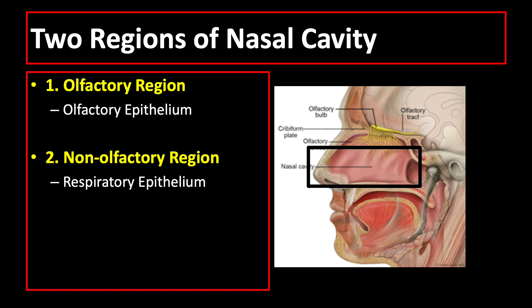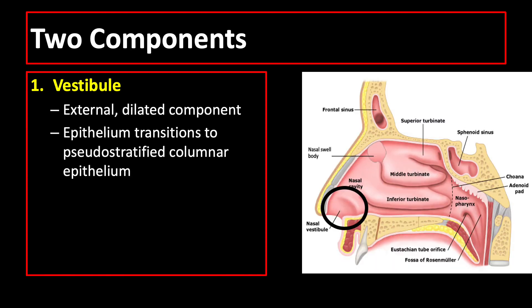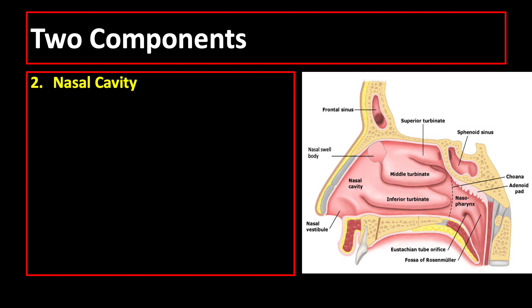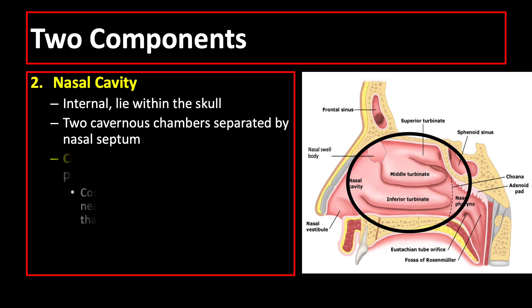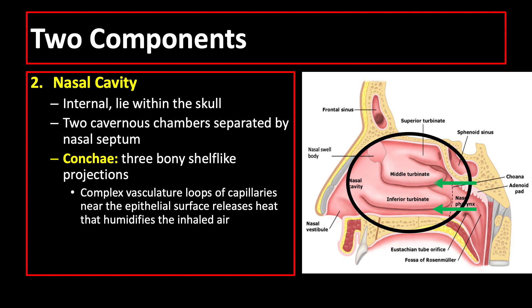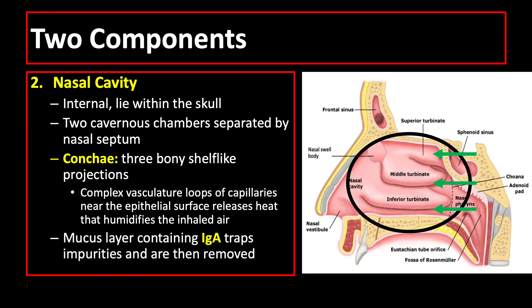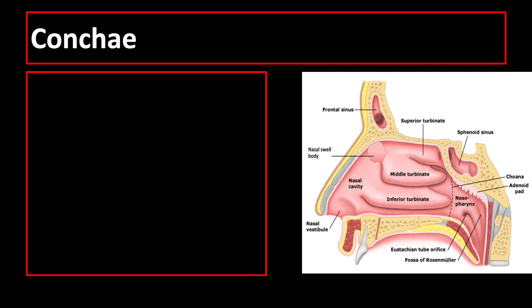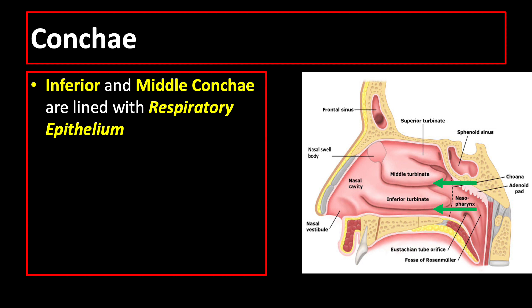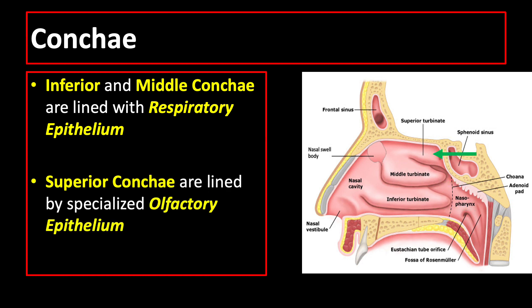The non-olfactory region consists of the vestibule and the nasal cavity. The vestibule is the external dilated part where the epithelium transitions from stratified squamous keratinized epithelium of the skin to pseudostratified columnar ciliated epithelium of the respiratory system. The nasal cavity is the internal component lying within the skull, containing three turbinates — inferior, middle, and superior — and a mucous layer that traps impurities. The inferior and middle conchae are lined with respiratory epithelium, while the superior conchae are lined by specialized olfactory epithelium.